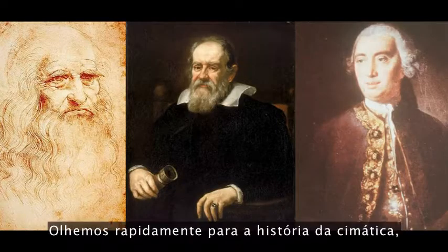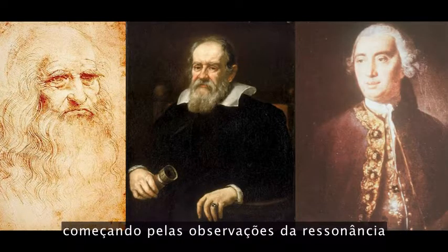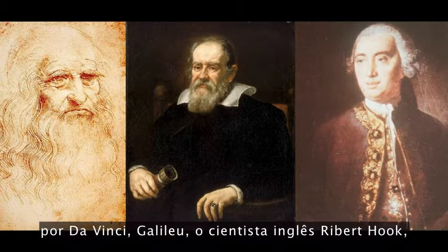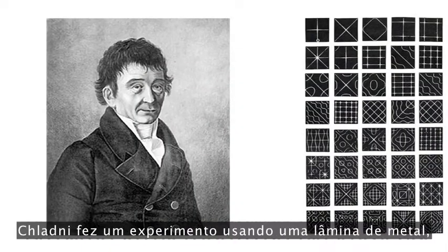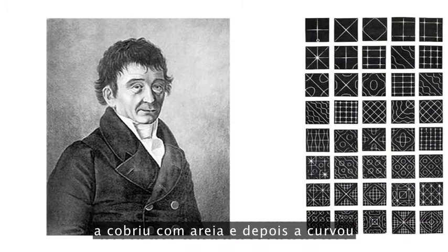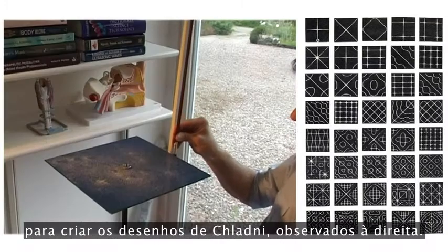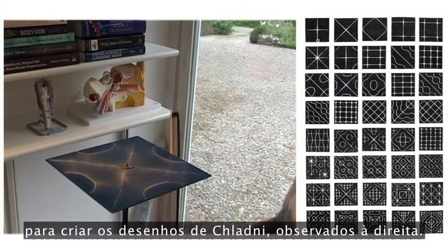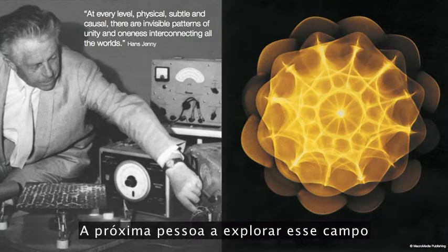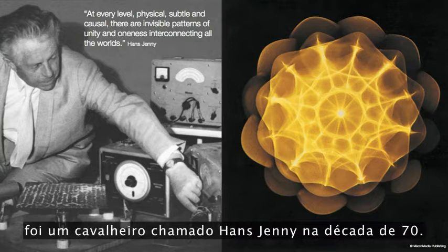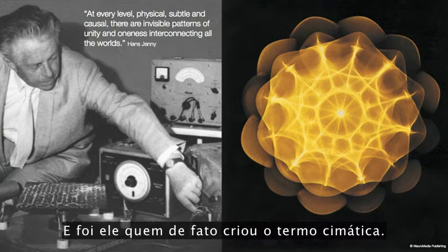If we have a quick look at the history of cymatics, beginning with the observations of resonance by da Vinci, Galileo, and the English scientist Robert Hooke, and then Ernest Chladni — he created an experiment using a metal plate, covering it with sand and then bowing it to create the Chladni patterns that you see here on the right. Moving on from this, the next person to explore this field was Hans Jenny in the 1970s, and he actually coined the term cymatics.